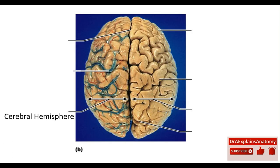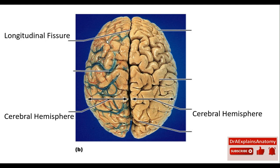This right here is the cerebral hemisphere. We have two cerebral hemispheres, which are separated by the longitudinal fissure. Earlier, we mentioned the transverse fissure, which separates the cerebrum from the cerebellum, whereas this is the longitudinal fissure, which separates the two cerebral hemispheres.